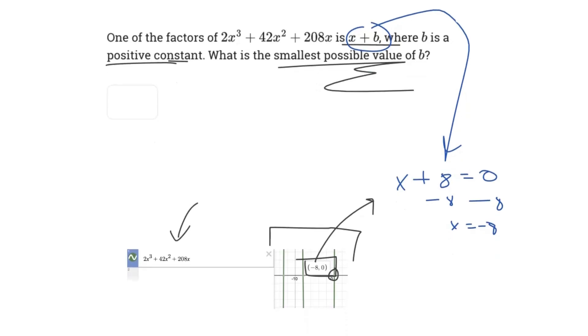So it's pretty much the same thing, but we know here using Desmos that the smallest possible value b is 8.